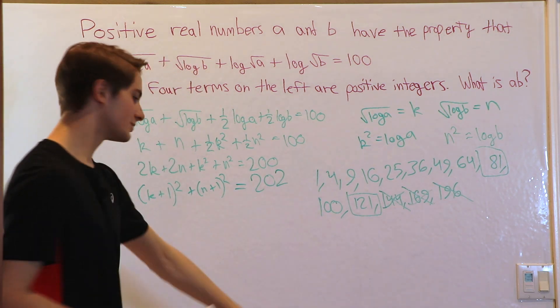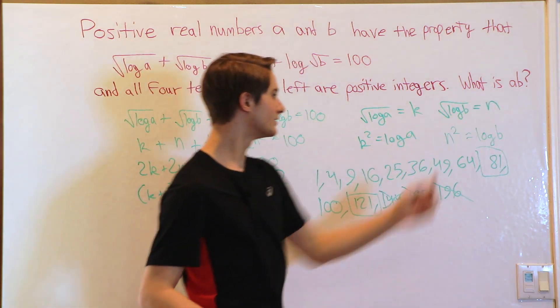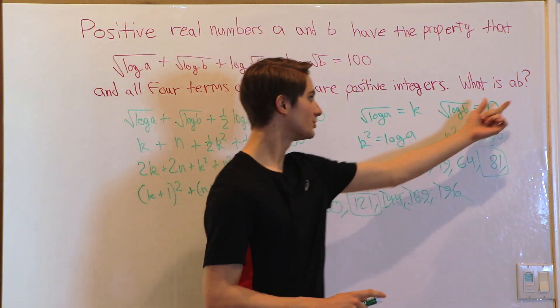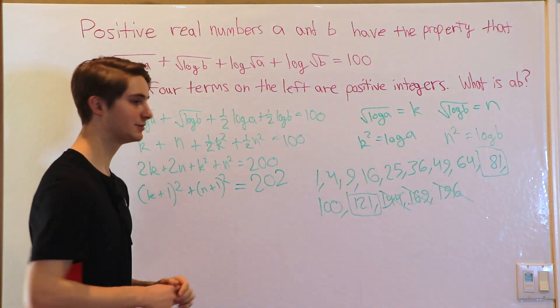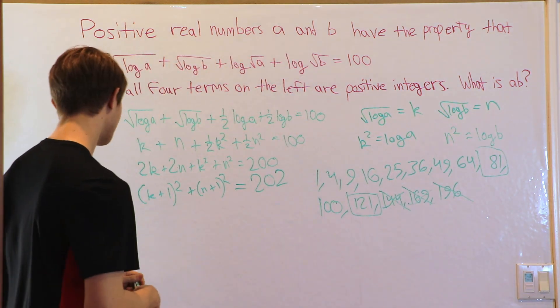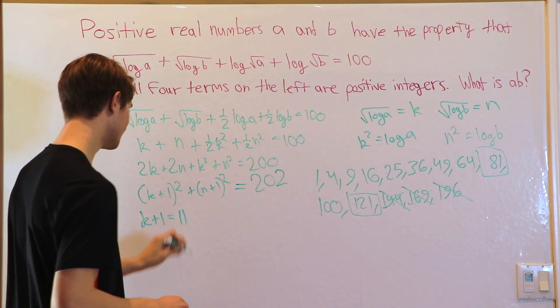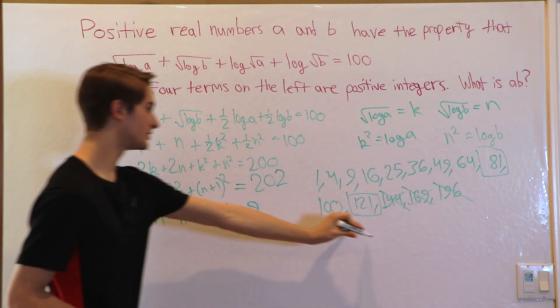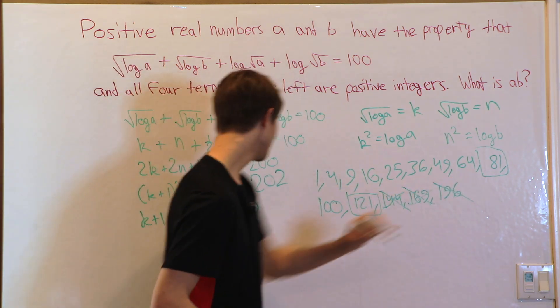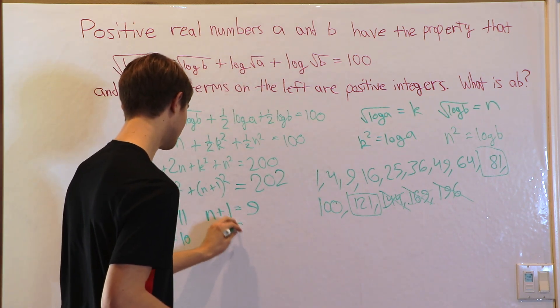So, which one's K and which one's N? It doesn't really matter because we want to find AB, which means, because multiplication is commutative, it's the same as BA. So which one is K and which one is N? It doesn't really matter. Let's say K plus 1 equals 11 and N plus 1 equals 9. So 11 squared is our 121, 9 squared is our 81. That means K equals 10, N equals 8. And we're almost there.